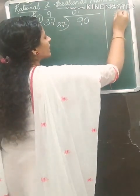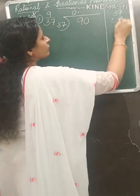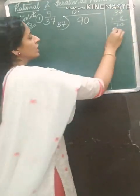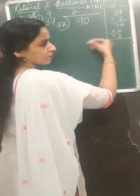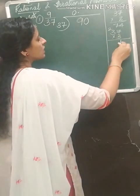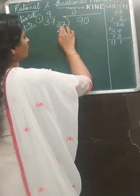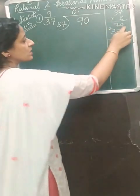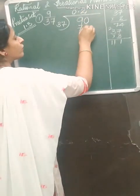Let us start. 37 times 2 is 74 — we got 7 twos are 14 carry 1, then 74. 37 times 3 would be a bigger number than 90 but let us check: 7 threes are 21 carry 2, 3 threes are 9, giving 111. So we will take the smaller number, which is 74. 37 times 2 are 74.